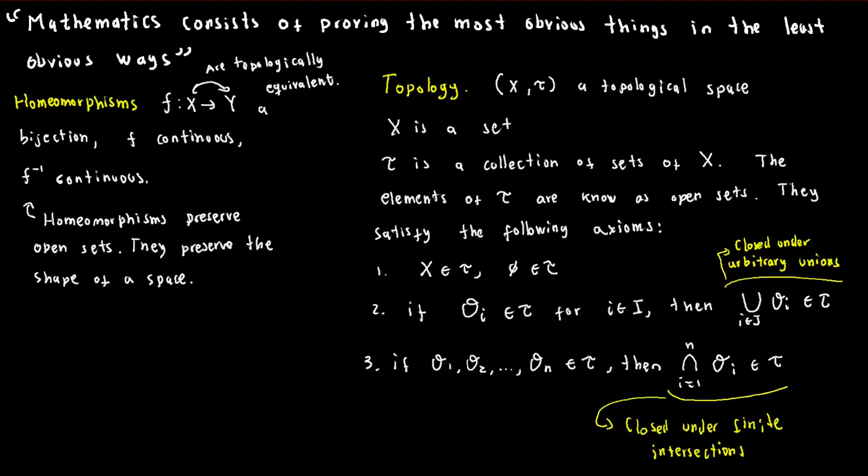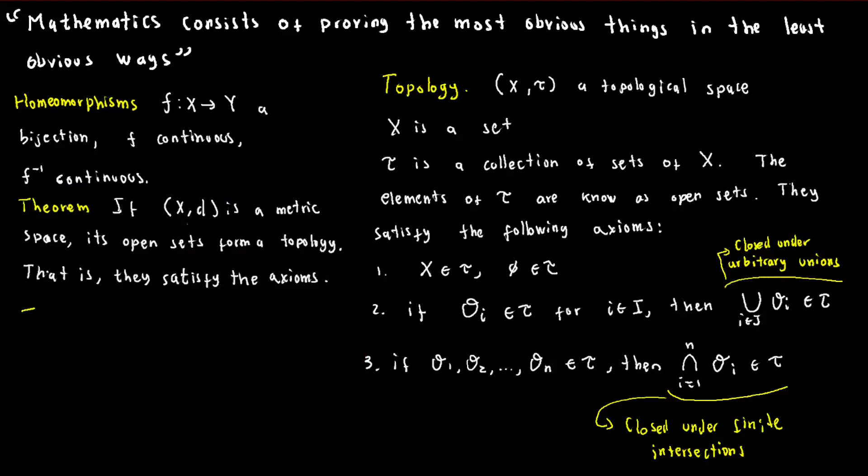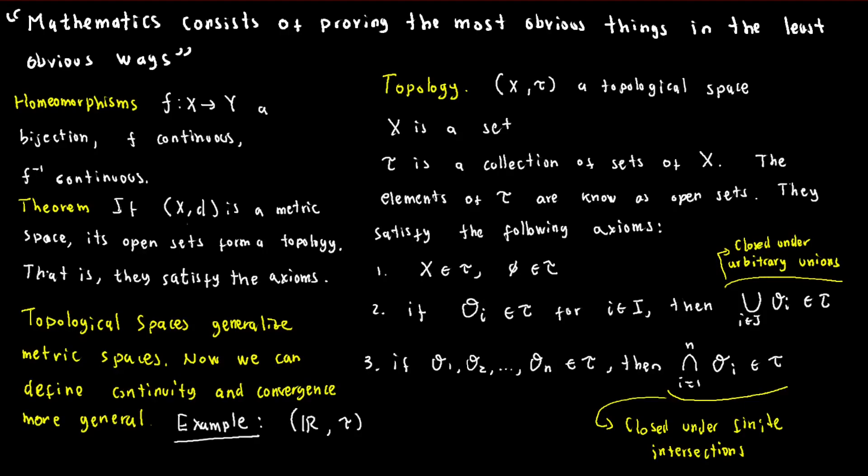The open sets of a metric space, as we defined them earlier, satisfy these three axioms. However, topologies can be defined for non-metric spaces as well. For example, consider a real line with a topology formed by open intervals from a number a to infinity. Both our definition of convergence and continuity can be extended to any topological space, that is, to any set endowed with a topology. So go ahead and imagine what convergence and continuity would mean for the topology of open intervals described above.